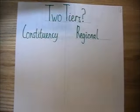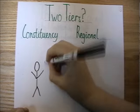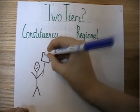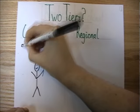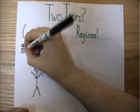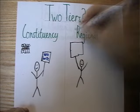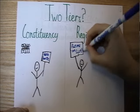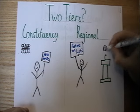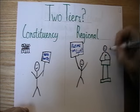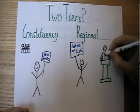However, one downside is that AMS can create an issue with two tiers of MSPs: constituency members, who have to make sure they can get re-elected by their constituents, and regional members, who need to make sure they can still get re-selected by their party.